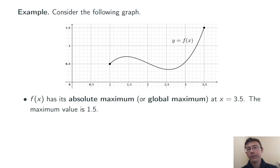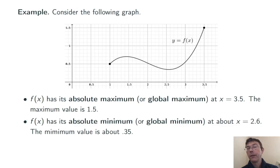So let's look at a graph. Here's a function, y equals f(x). Just by inspection, we can see that it gets its highest value at the far right endpoint, x equals 3.5. We're going to call that an absolute or global maximum. It's as big as the function gets on its domain. The maximum value of the function there is about 1.5.